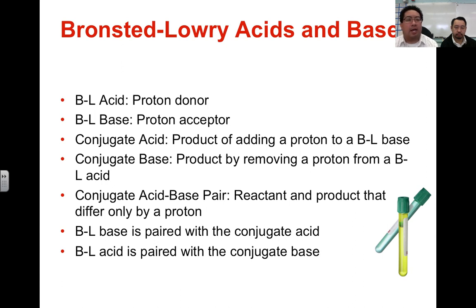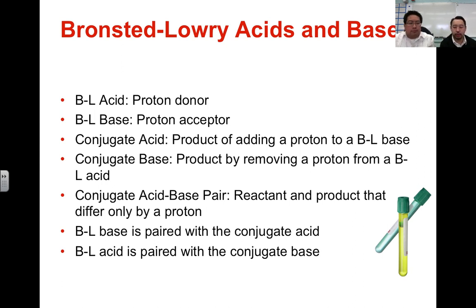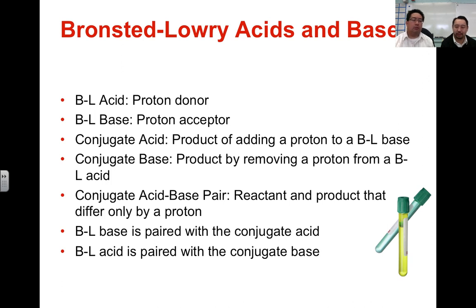This was developed by two guys working in conjunction: Bronsted and Lowry. The Bronsted-Lowry definition is a little more generalized. Bronsted-Lowry acids are proton donors, and Bronsted-Lowry bases are proton acceptors. As a result of a Bronsted-Lowry acid donating a proton, the leftovers are called a conjugate base. Similarly, if a Bronsted-Lowry base accepts a proton, it becomes a conjugate acid. The process of donating or accepting a proton gives rise to what's called the conjugate.